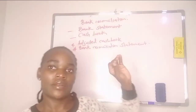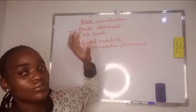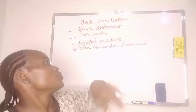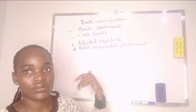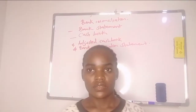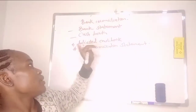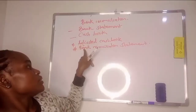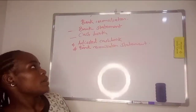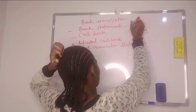They give you the bank statement and the cash book — all the items that appear in each — and you are supposed to prepare the adjusted cash book and the bank reconciliation statement. Errors made in the cash book are corrected in the adjusted cash book, and errors made in the bank statement are corrected in the bank reconciliation statement. The cash book is prepared by the company, and the bank statement is prepared by the bank.